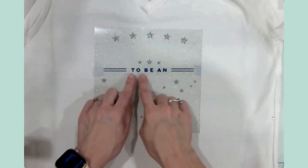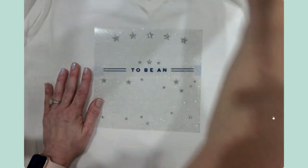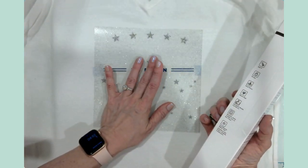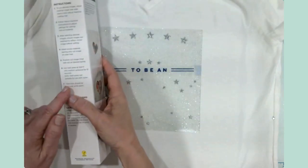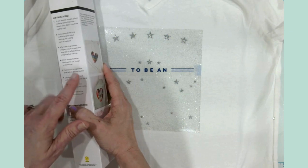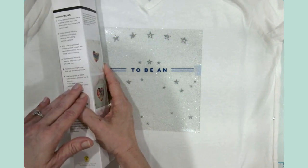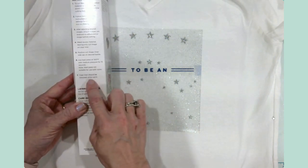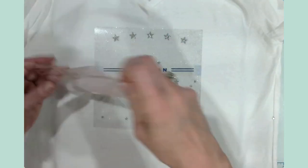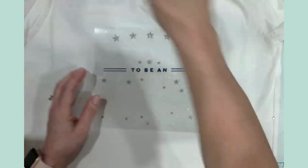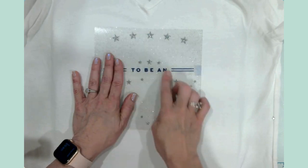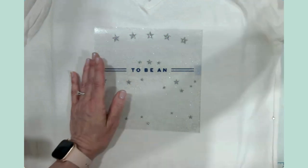So according to the Cricut heat guide we would have pressed this for 330 degrees for 30 seconds, but according to the directions on this box it is 320 for 15 seconds. So I'm going to go ahead and do 320 for 15 seconds with medium pressure, and then the liner comes off when it's warm but not hot. Then I'm going to bring this piece back in and press it again for another 15 seconds. That would be a total of 30, but I will have to lay this sheet back over to protect the exposed vinyl. So let's go ahead and do that.